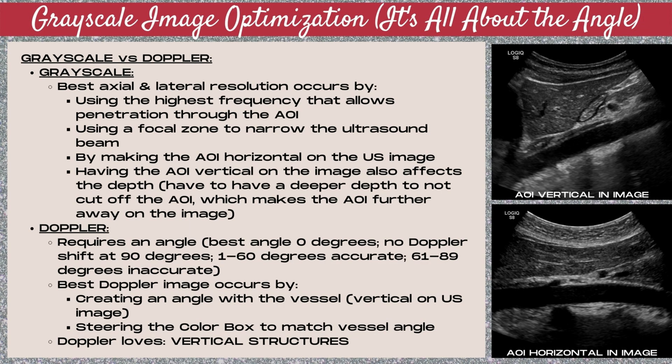One crucial thing to keep in mind when optimizing images is that grayscale ultrasound images and Doppler ultrasound images have different needs. For a grayscale image, the best axial and lateral resolution is going to occur by using the highest frequency transducer that allows penetration all the way through the area of interest, and by using a focal zone to narrow the ultrasound beam. Making the area of interest horizontal on the image allows us to place the focal zone at the level of the area of interest and provide superior lateral resolution throughout.